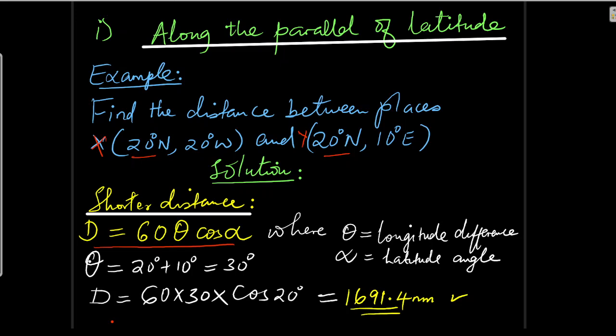We start by getting the longitude difference. The longitudes are 20 degrees west and 10 degrees east. To get the longitude difference when one place is to the east and the other to the west, we add. So the longitude difference is 20 + 10 = 30. Therefore the distance in nautical miles along the small circle is 60 × 30 × cos(20°), and that gives 1691.4 nautical miles.